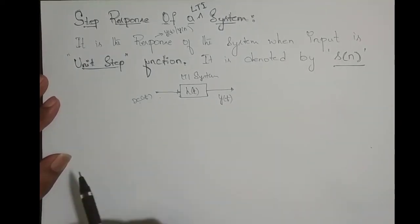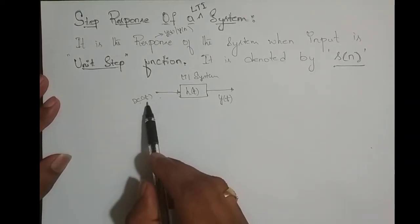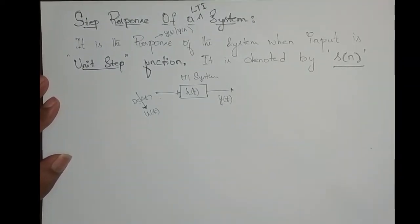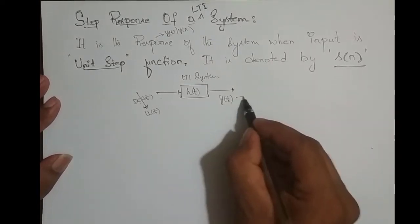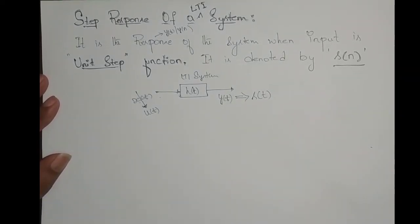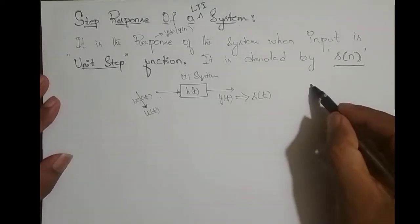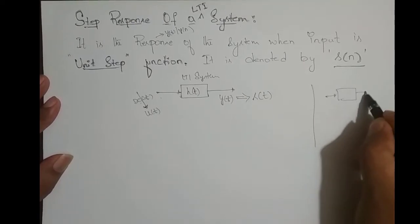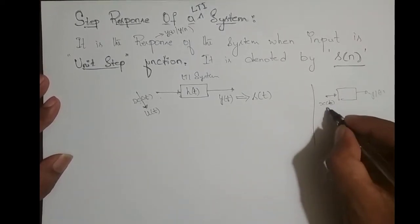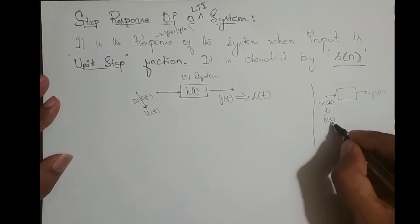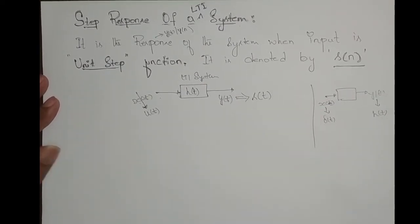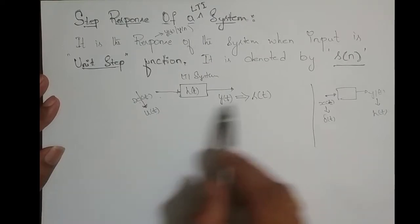Since we are defining step response, the input we feed is the unit step function u(t), and the response is the unit step response s(t). This is analogous to impulse response: if the input is δ(t), the output is h(t). Similarly, if the input is the unit step function, the output is the step response.